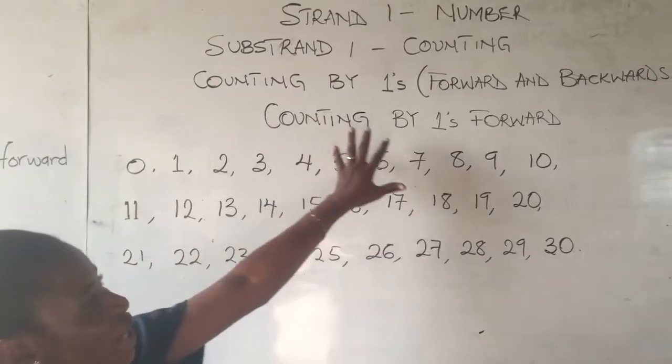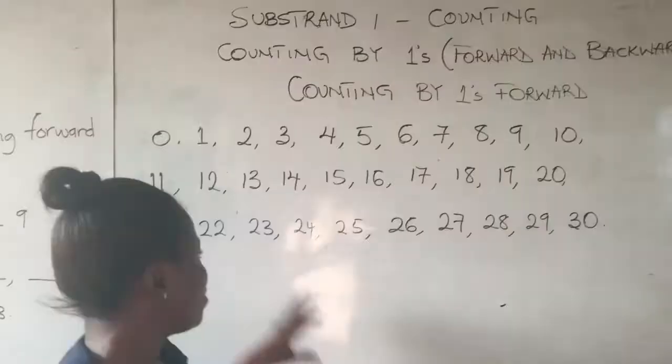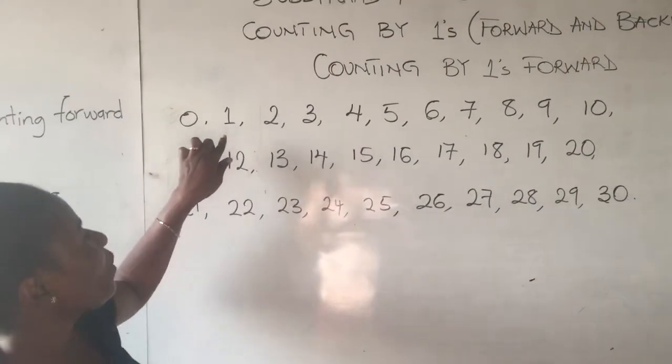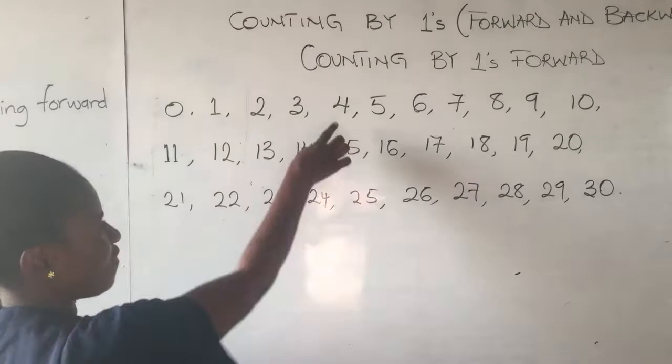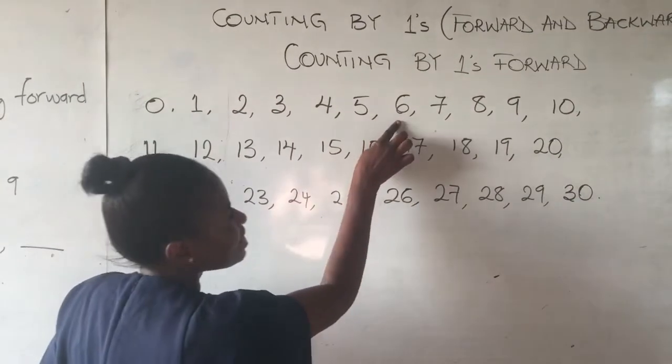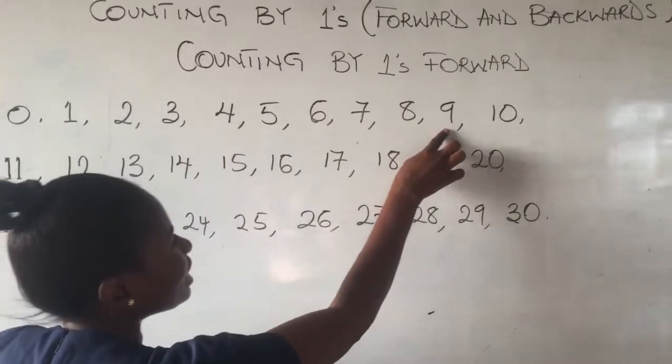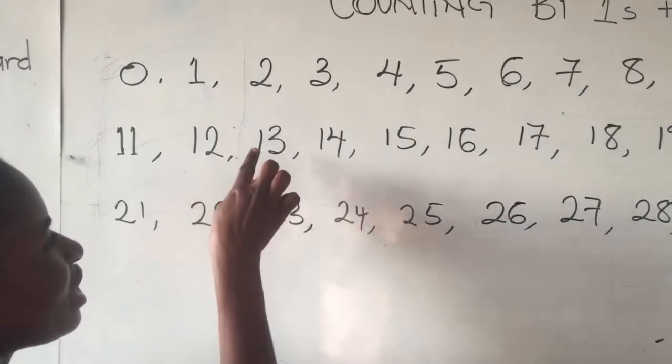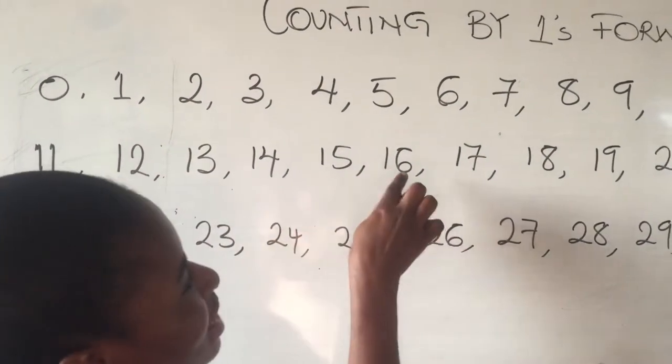Very good. So counting by ones forward. We are counting forward in ones up to 100. We are starting from 0. So we have 0, 1, 2, 3, 4, 5, 6, 7, 8, 9, 10, 11, 12, 13, 14, 15, 16.